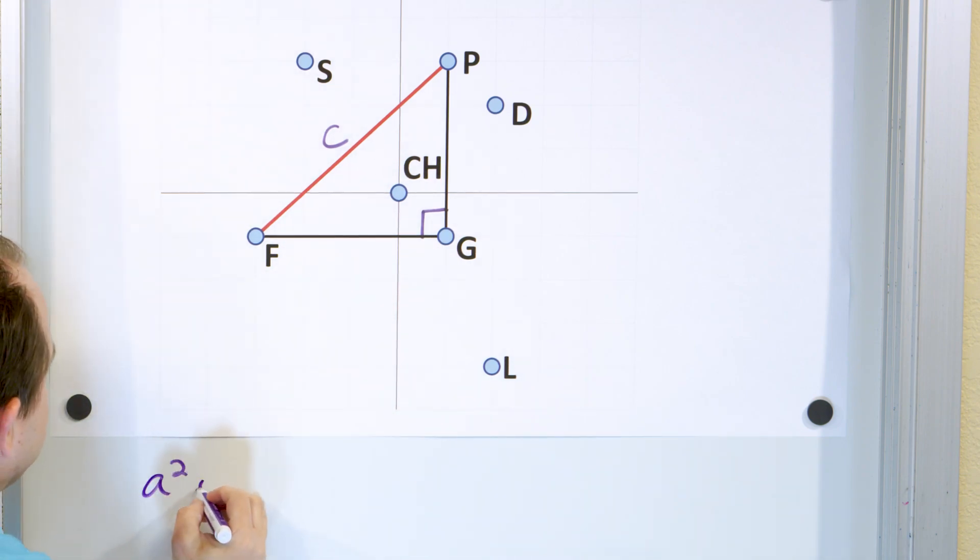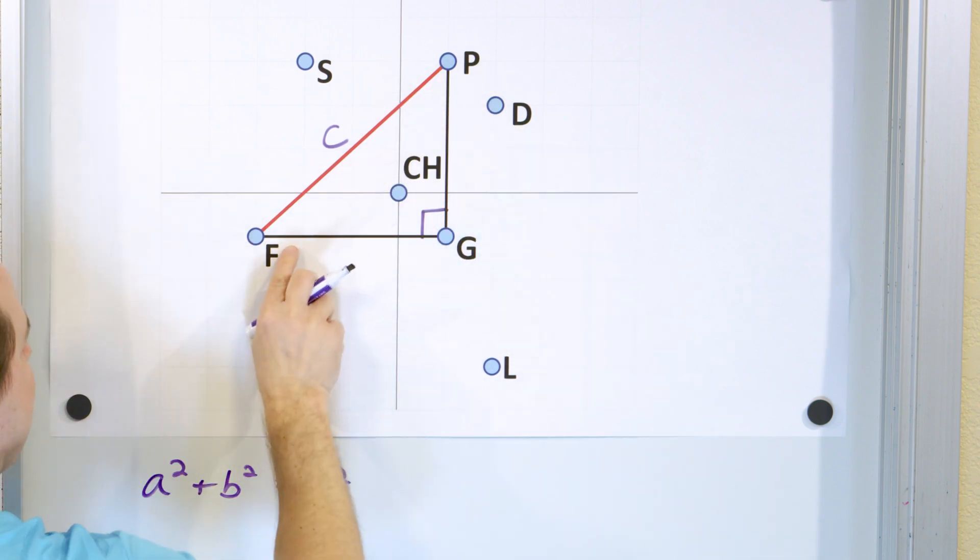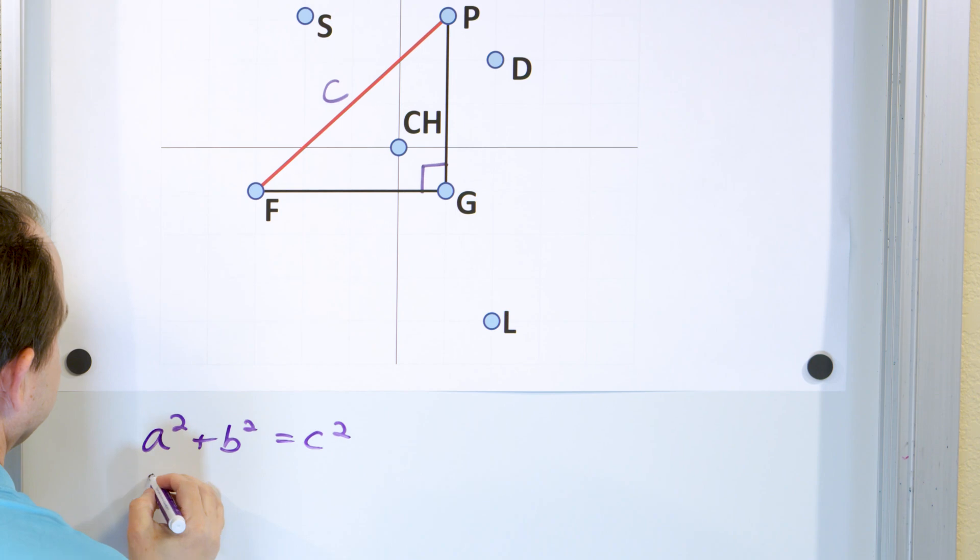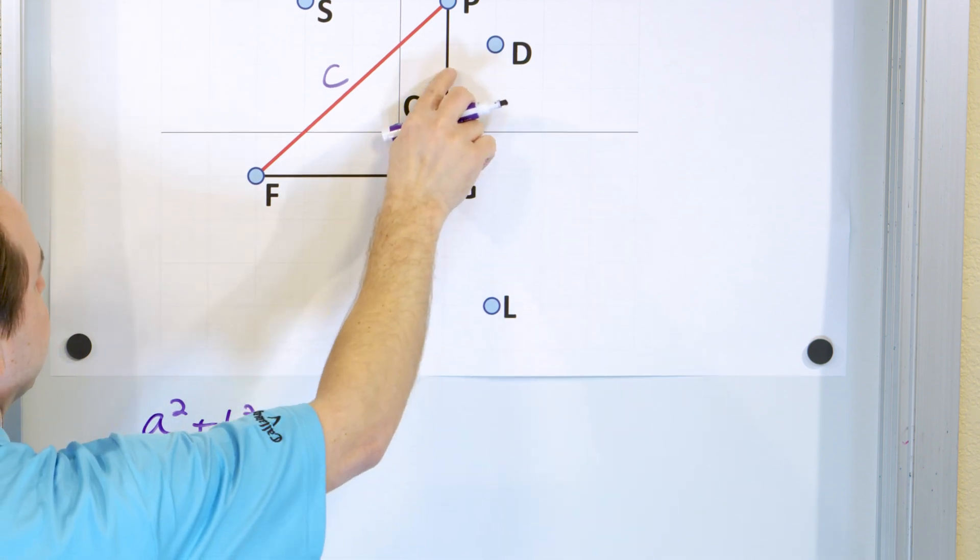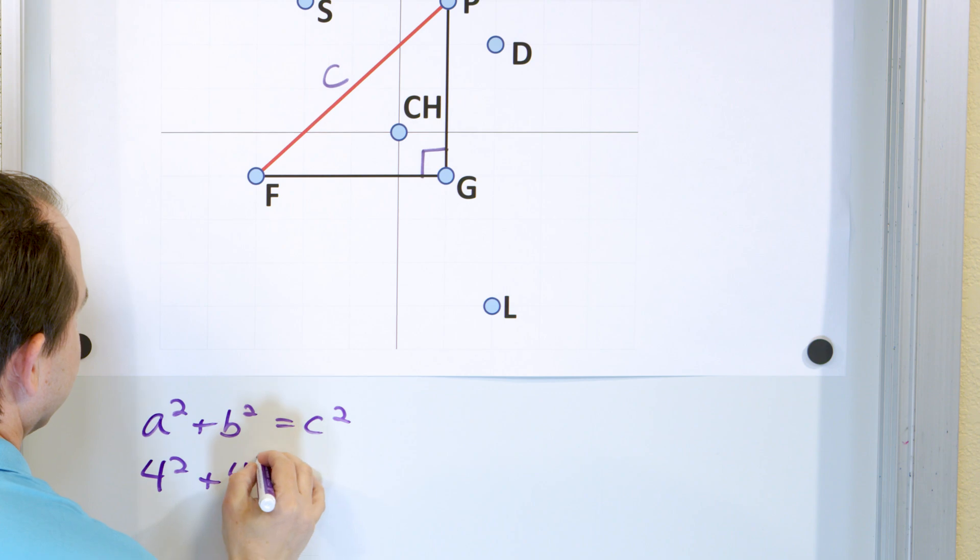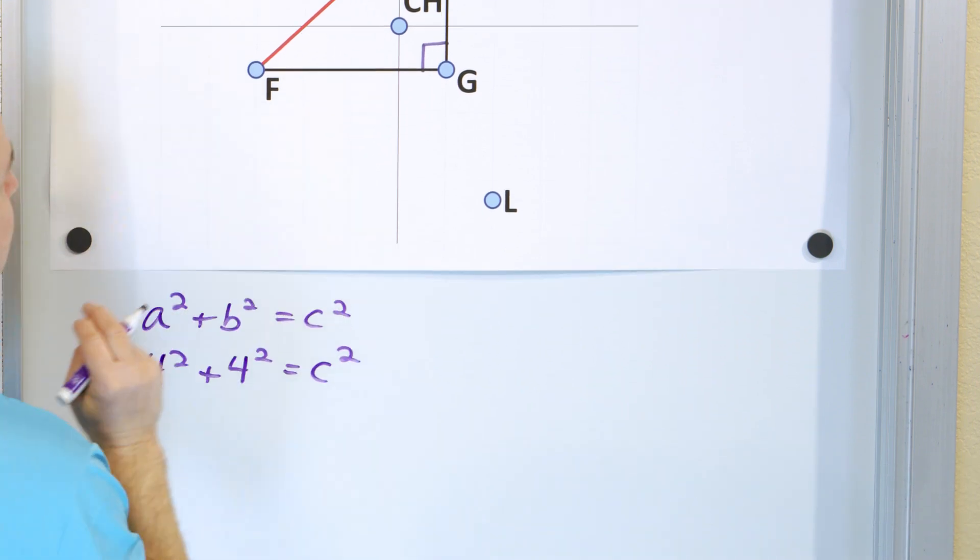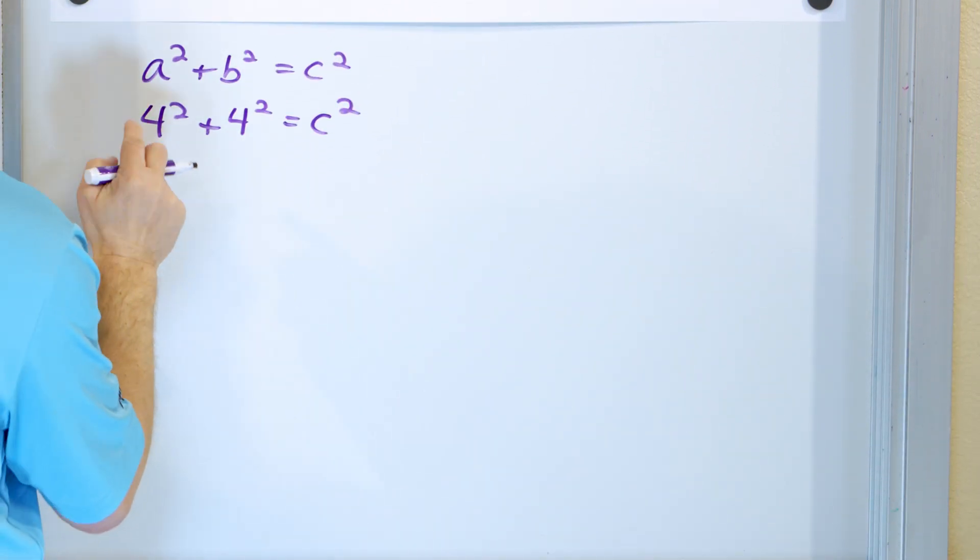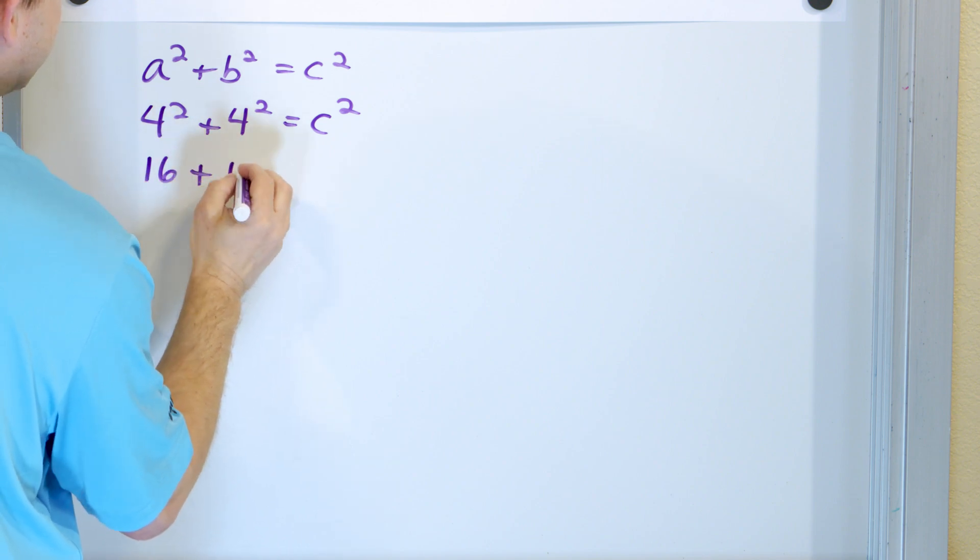So we know that A squared plus B squared has to equal C squared. And A and B are these sides, one, two, three, four. So four squared plus B, one, two, three, four. So four squared and C is what I'm trying to find. So I put C squared right there. So here I have 16 and then I have 16.